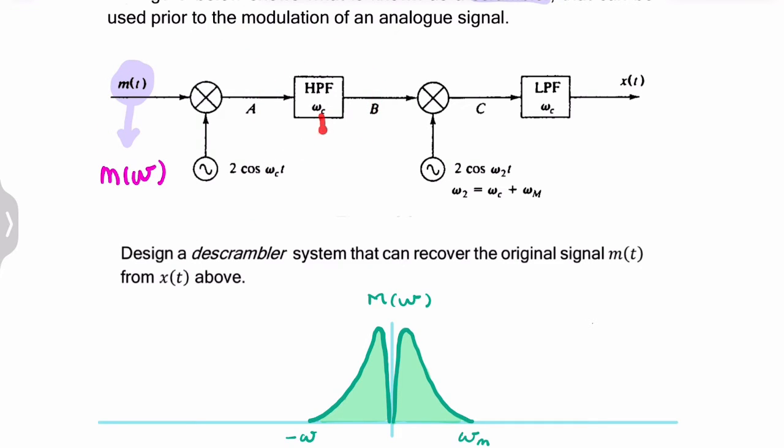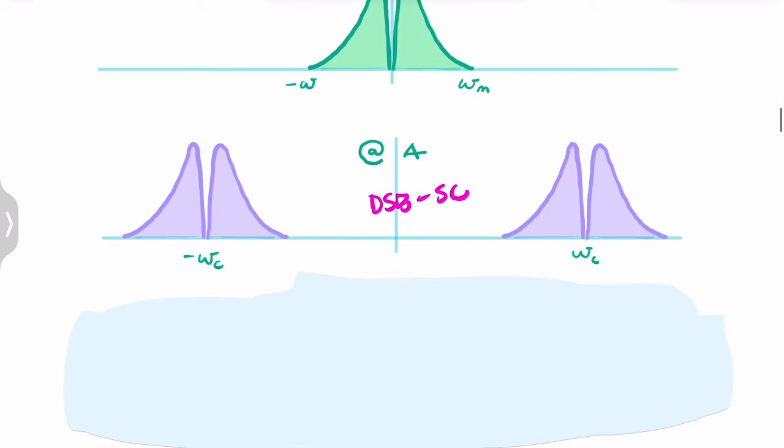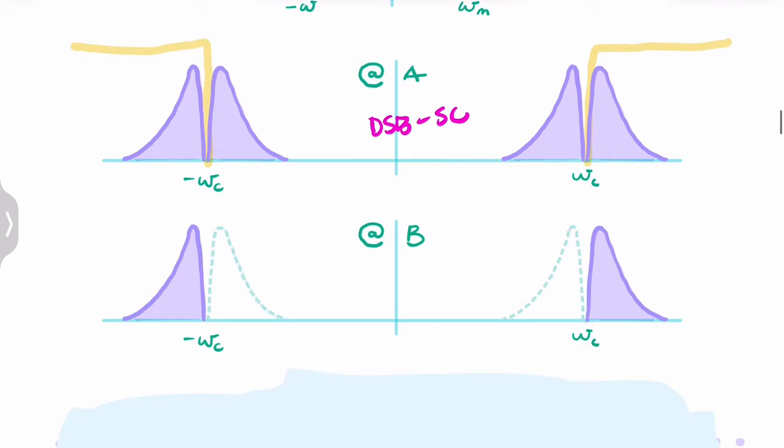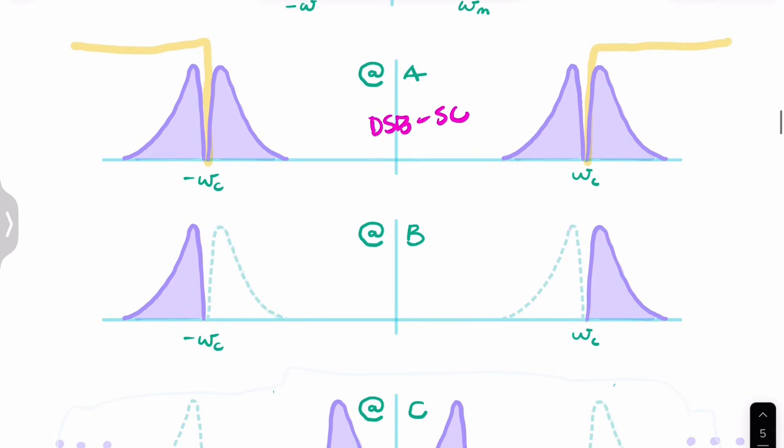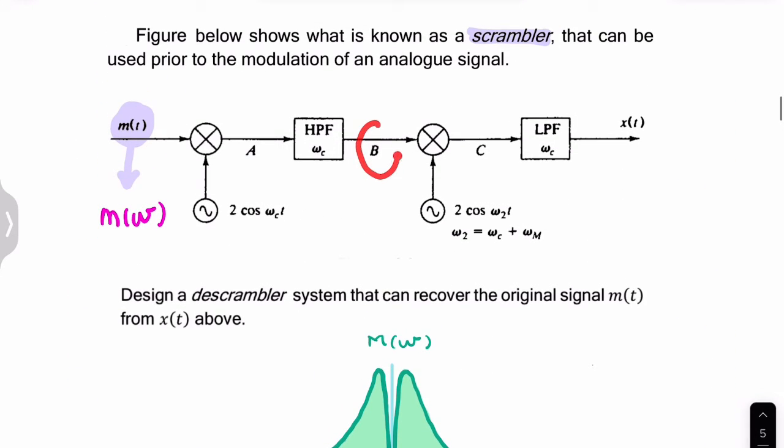Then we have a high-pass filter with a cutoff frequency at ωc. The high-pass filter will pass the high frequencies and block the low frequencies. After the high-pass filter, the lower frequency components will be removed and we'll end up with these two upper copies. This is what the signal looks like at point B after the high-pass filter.